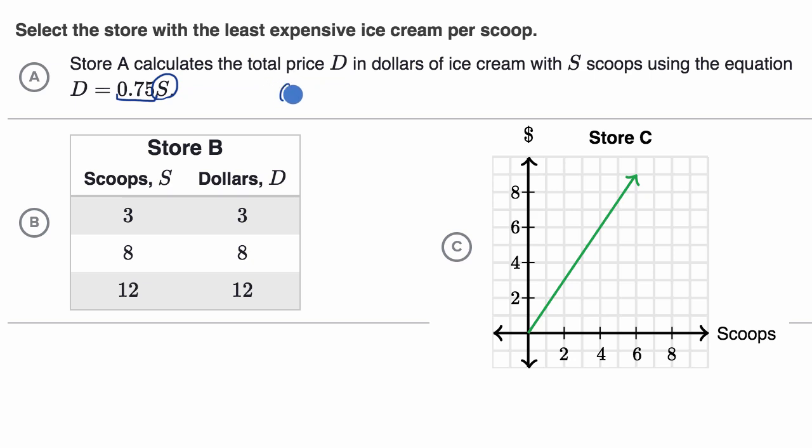...in store A, it is 75 cents, 75 cents per scoop. So we know the price there. And anything like this when you're comparing, you want to put it all in the same terms. So okay, here it's 75 cents per scoop. Let's think about how much per scoop it is at B and how much per scoop it is for C.